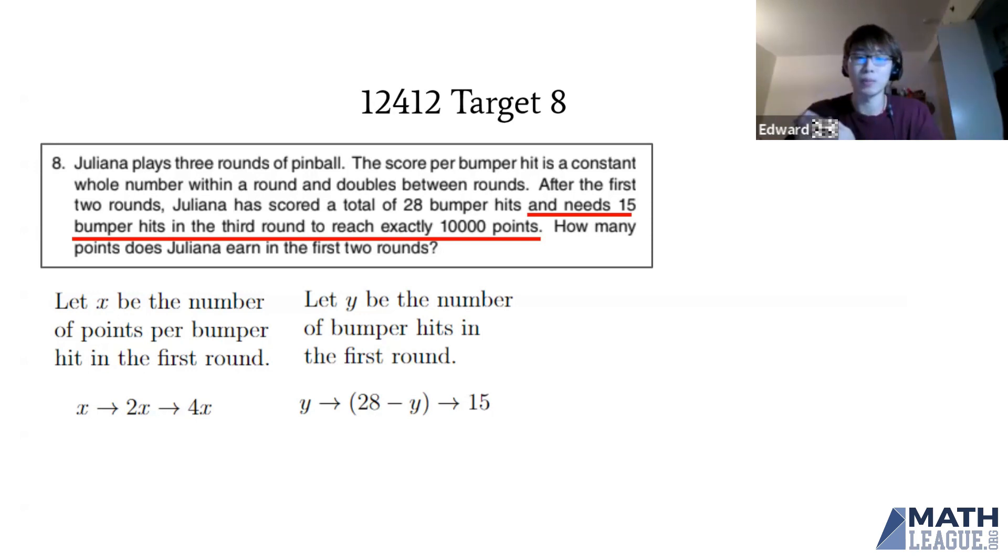Now we know how many points each bumper hit earned and how many bumper hits in each round. In total: XY + 2X(28 - Y) + 4X(15) = 10,000.